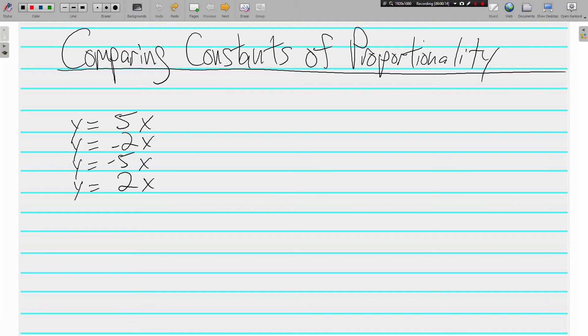Today we're going to look at comparing them, which basically we're going to say, which one's greater, which one's less. So here are four different equations that have constants of proportionality, and I just want to put them in order from least to greatest. Which one has the lowest constant of proportionality? That's going to be the one with the lowest value for k. We know that these equations are in the form y equals k times x.